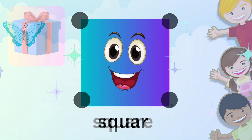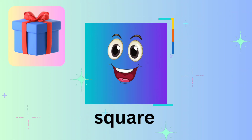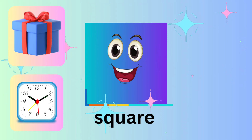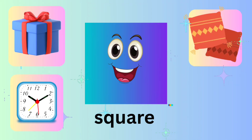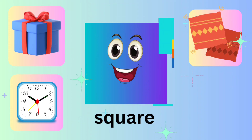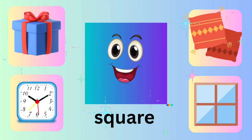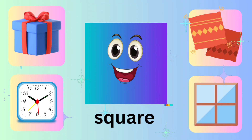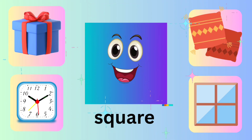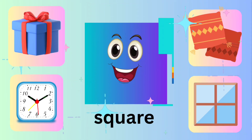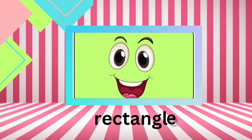For example, you can wrap me as a gift box. You can watch me as a wall clock. You can sleep on me as a pillow. You can open me as a window. All these objects can be seen in the shape of a square.